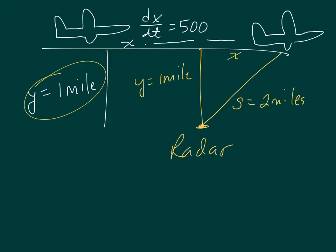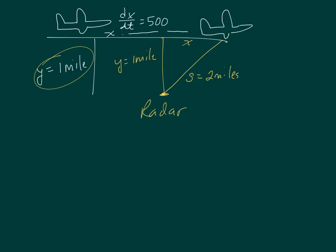We want to find the rate at which the distance from the plane to the radar station is increasing. So basically, what we're looking for is ds/dt.